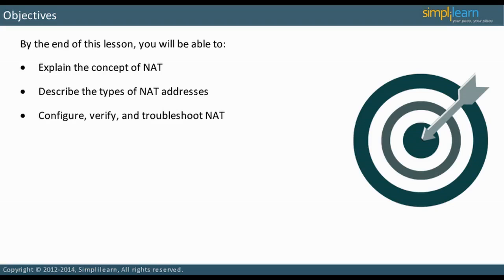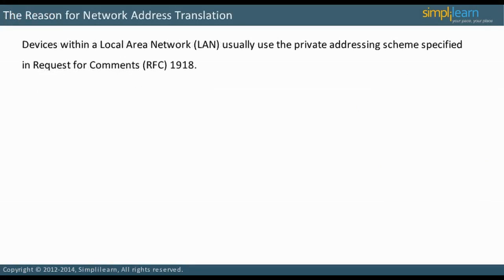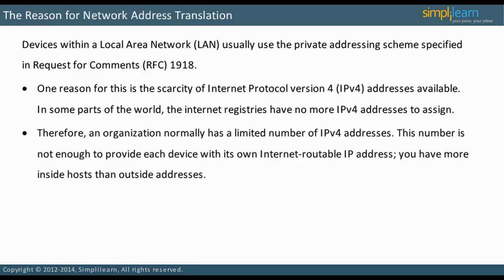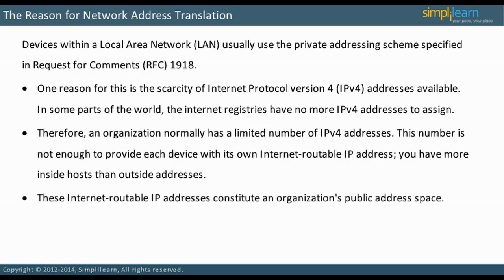Why is address translation needed at all? Devices within a local area network, LAN, usually use the private addressing scheme specified in RFC 1918. One reason for this is the scarcity of IPv4 addresses available. In some parts of the world, internet registries have no more IPv4 addresses to assign. Therefore, an organization normally has a limited number of IPv4 addresses — not enough to provide each device with its own internet-routable IP address. There are more inside hosts than outside addresses. These internet-routable IP addresses constitute an organization's public address space.